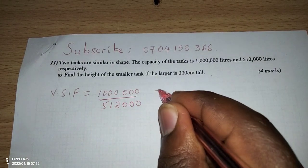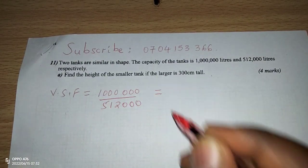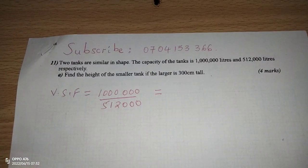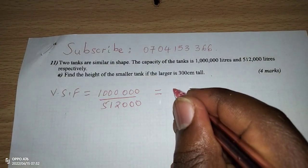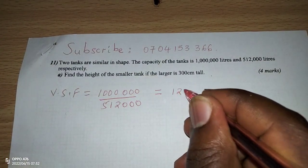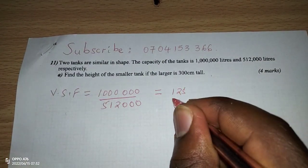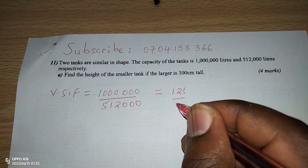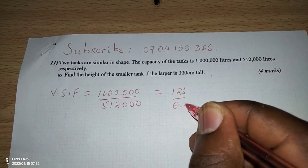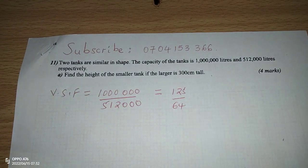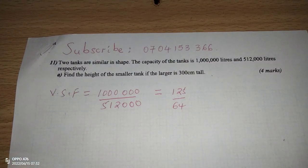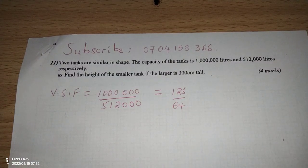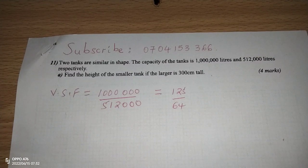When we simplify, we will get the simplest ratio of 125 divided by 64.